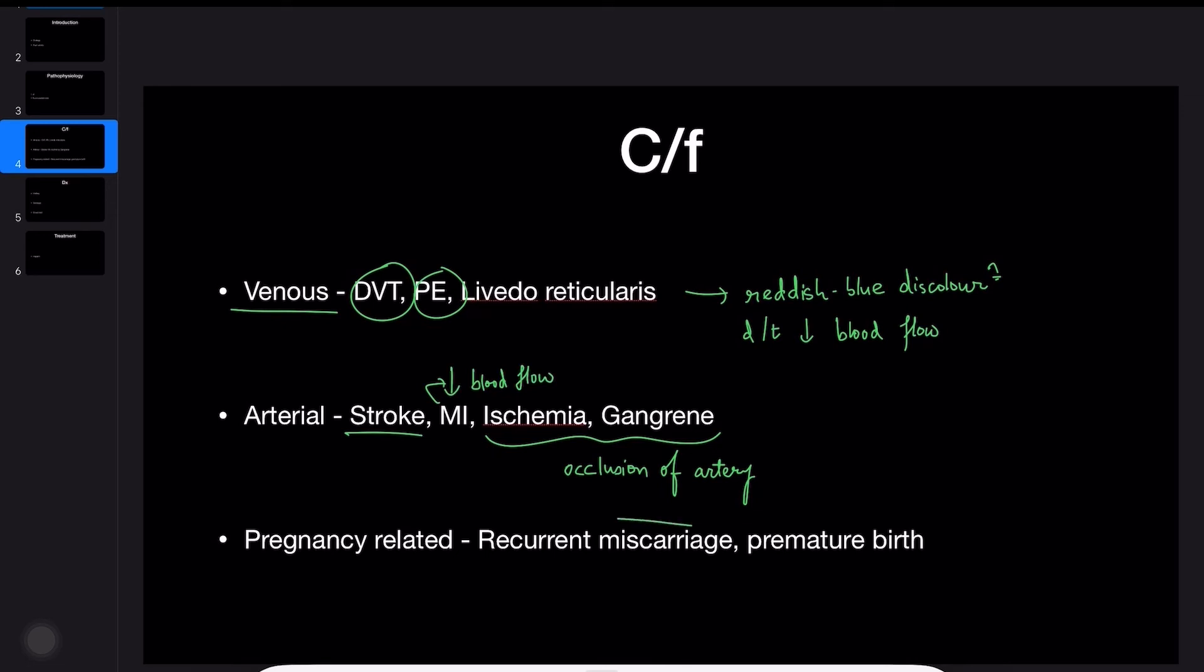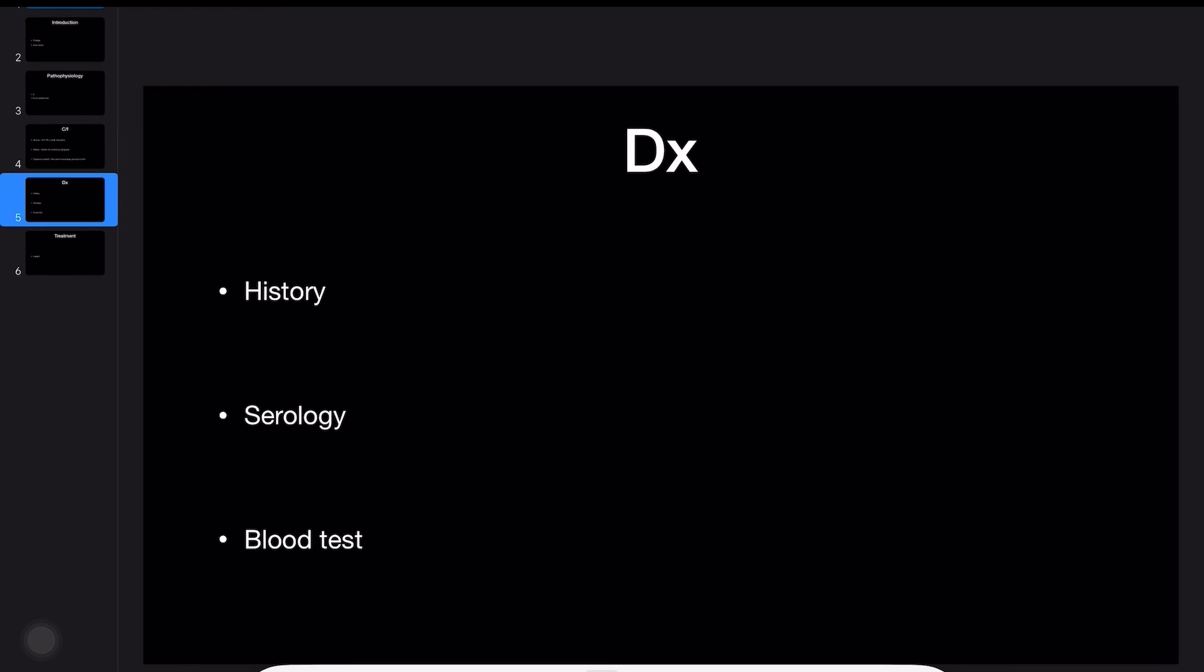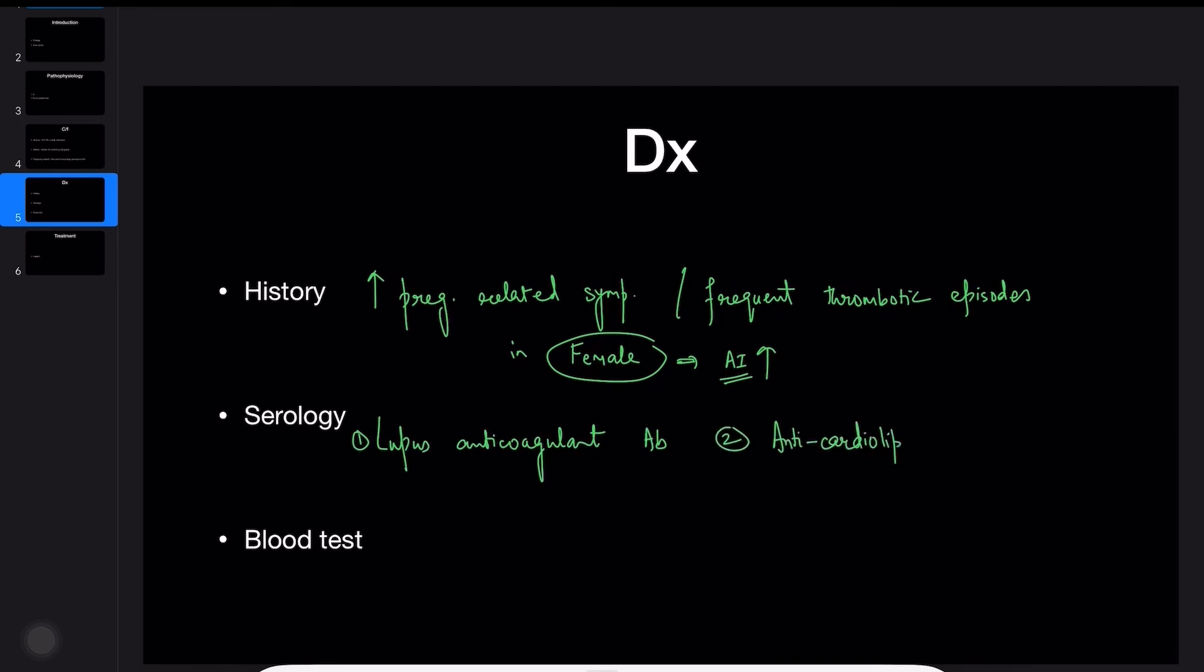I already mentioned the pregnancy-related symptoms. Think of APS when you see such findings in a patient. A history of recurrent miscarriages or thrombotic episodes coupled with presence of lupus anticoagulant, anti-cardiolipin antibodies, and anti-beta-2 glycoprotein antibodies will confirm a case of APS.